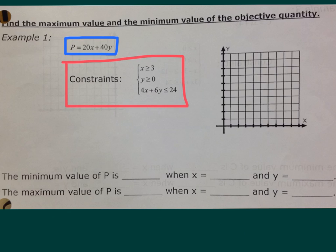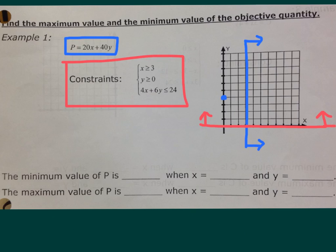Let's graph our constraints. We've got x is greater than or equal to 3 — that's a solid vertical line through x equals 3, shading to the right. y is greater than or equal to 0 — that's the line y equals 0, shading above. And 4x plus 6y is less than or equal to 24. Finding intercepts: when x is 0, y is 4; when y is 0, x is 6. Connect the dots — shade below this line.